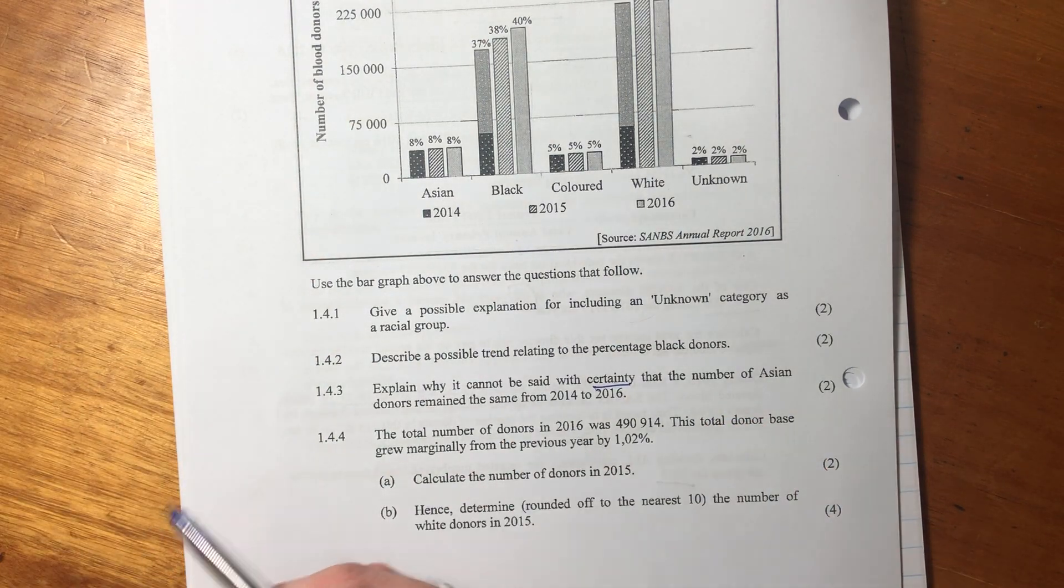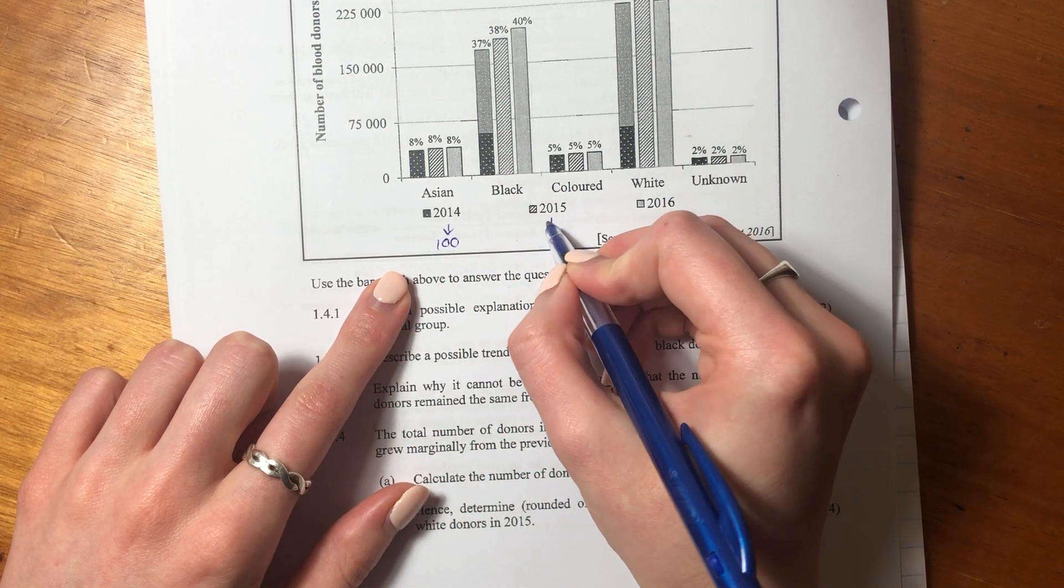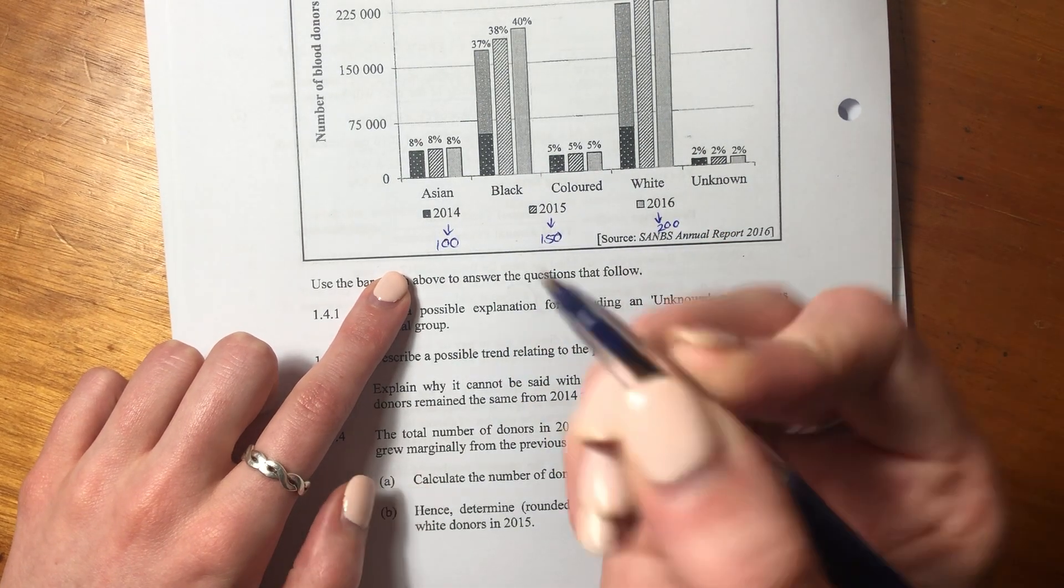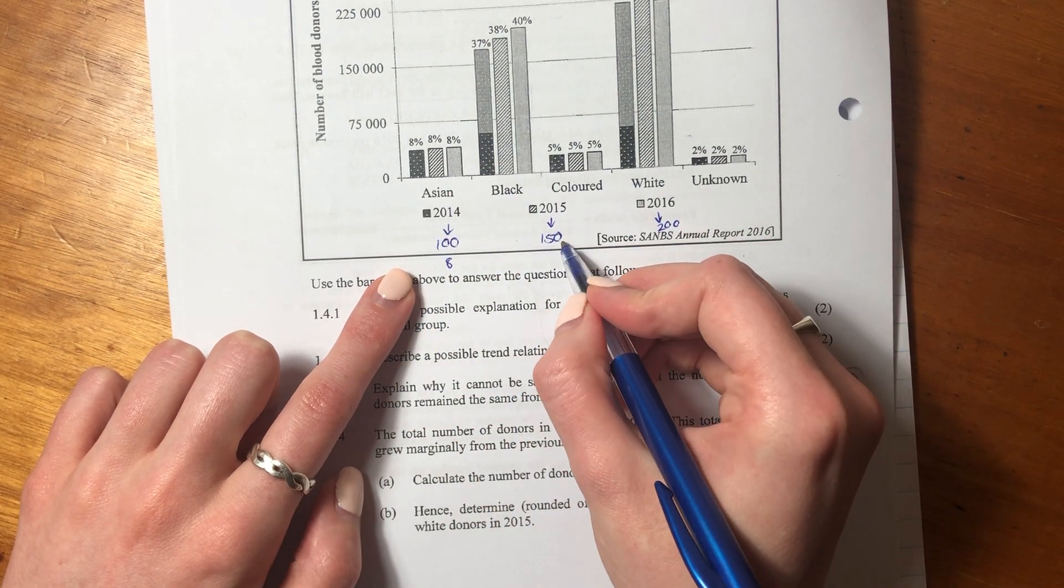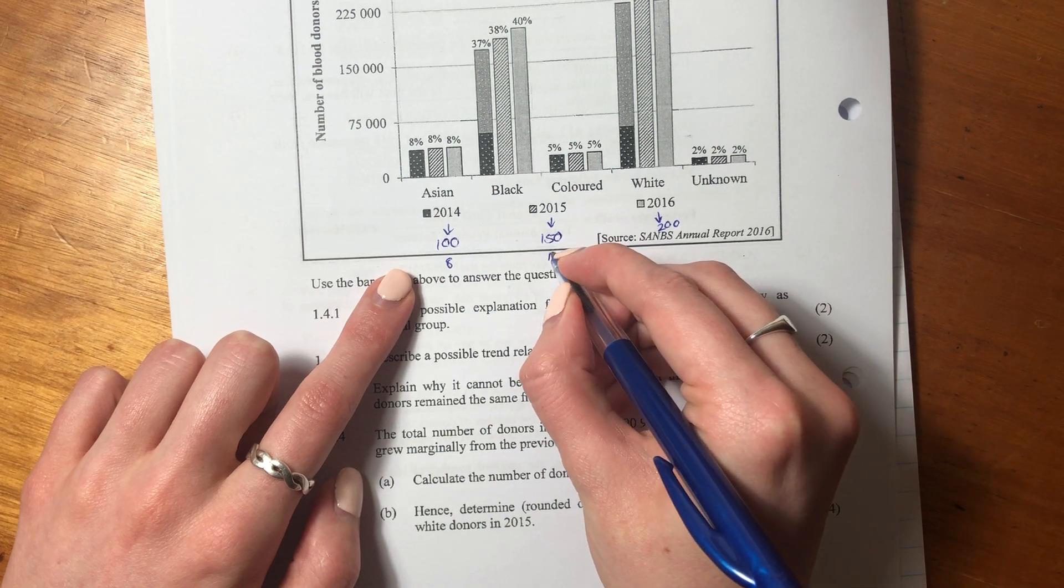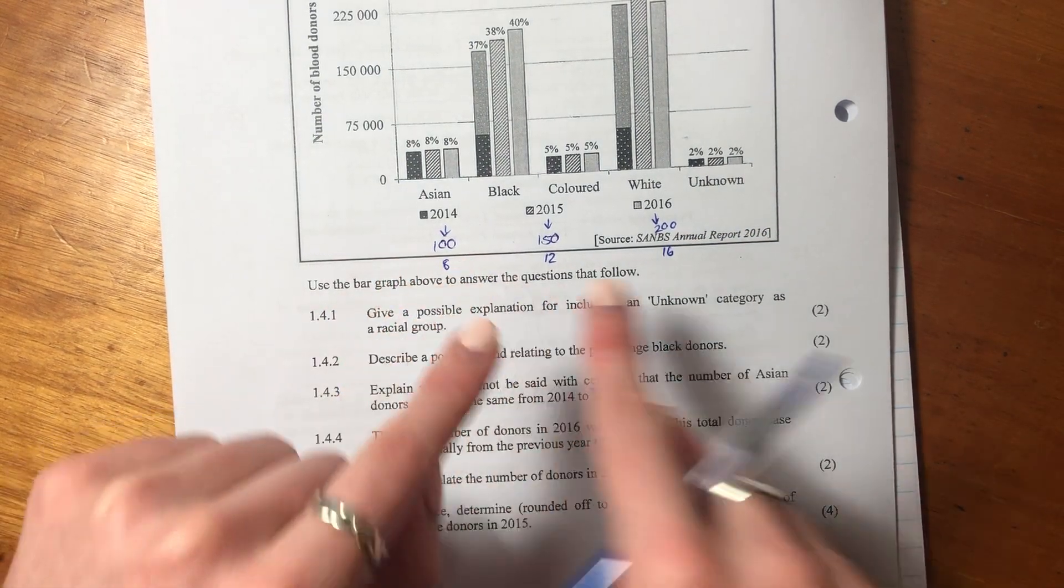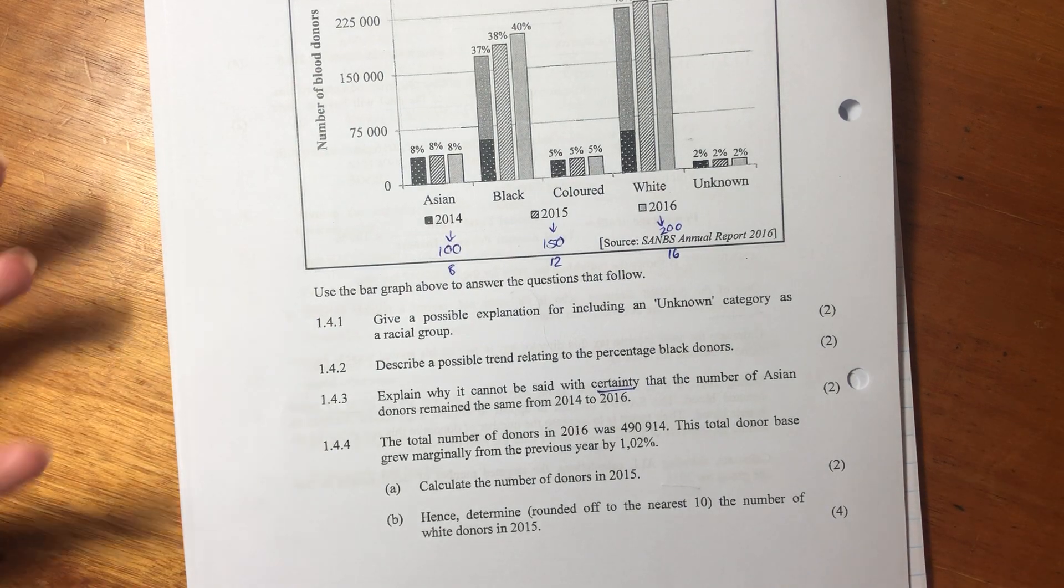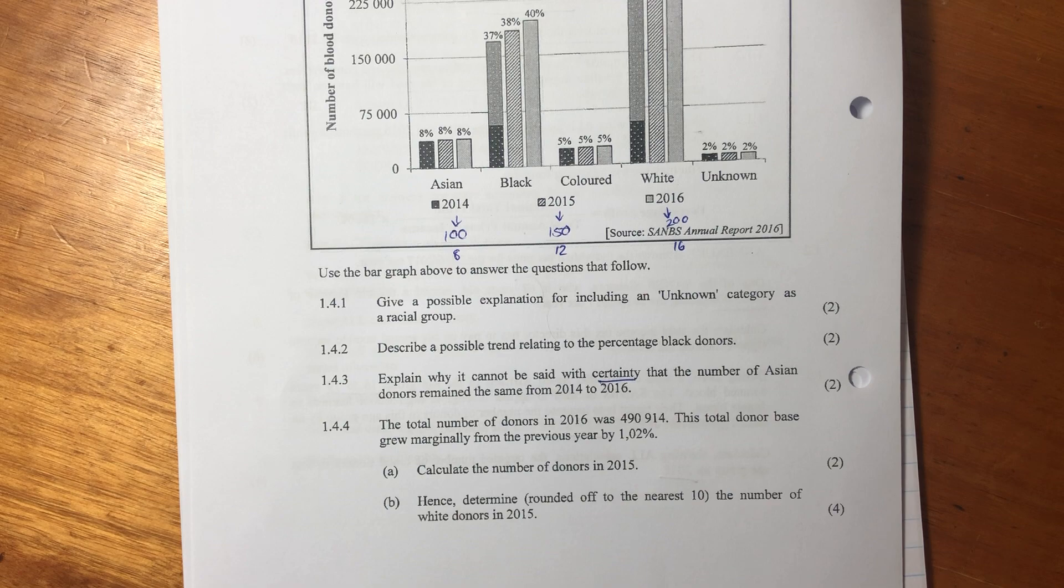Because if I said to you what's 8% of 100? You'd say that's 8. So let's imagine that in 2014 there was 100 people that donated, in 2015 there was 150, and in 2016 there was 200. 8% of 100 is 8 people. 8% of 150 is 12. 8% of 200 is 16. So you can see it's still 8%, but of what total? We don't know what that total is. And that's why we can't be completely sure, because we're not actually sure of the number of people, the total number of people that donated blood.